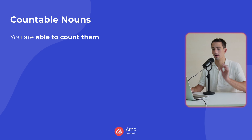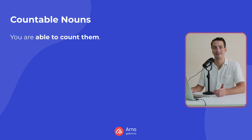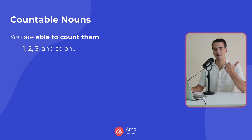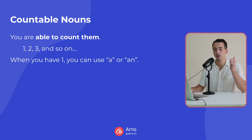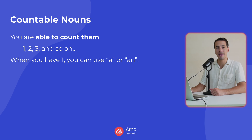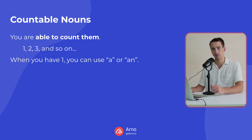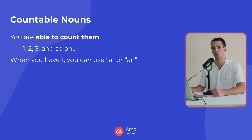Countable nouns — you can count. That's why it is named countable. So that means you can have one, two, three, and so on. And when you have one of a countable noun, you can use 'a' or 'an.' This is the first grammar concept that's important to understand with countable versus uncountable.